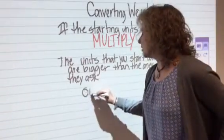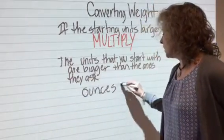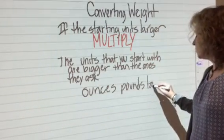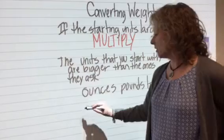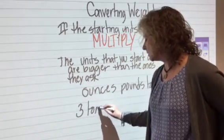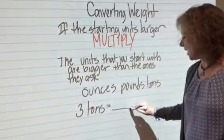So when we're dealing with ounces, pounds, and tons. If they start with 3 tons equals how many pounds?